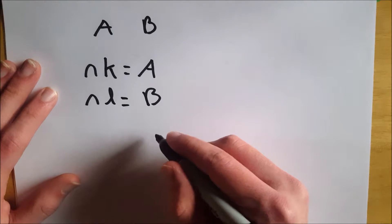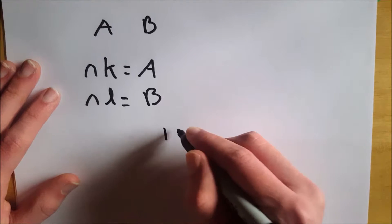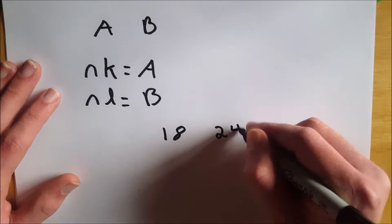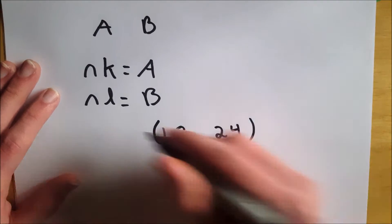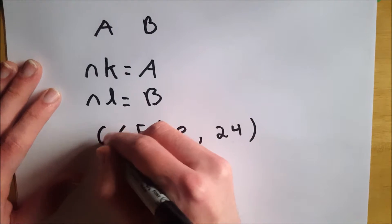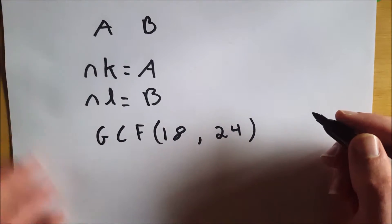So let's just look at a quick example. Suppose we're looking at 18 and 24, and we want to find the greatest common factor. I'll just write this in notation. The greatest common factor, GCF, of 18 and 24.